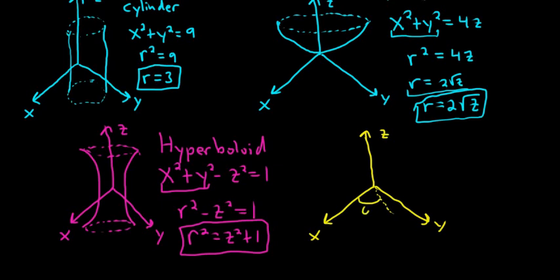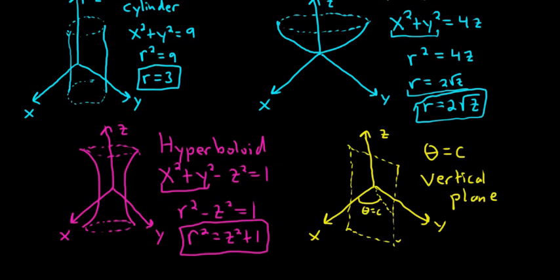I always have a hard time graphing this one. Basically I'm going to do something like this, and here I'm going to have an angle. My angle is θ = c, and then I'm going to draw what appears to be a vertical plane. So θ = c is a vertical plane.